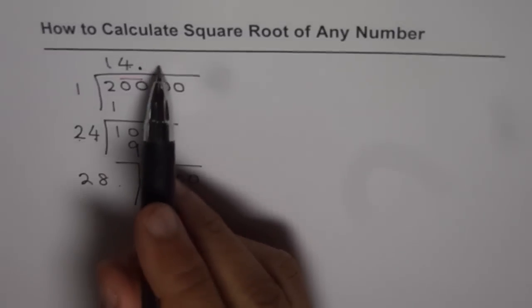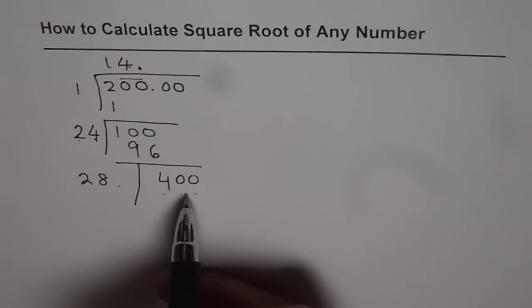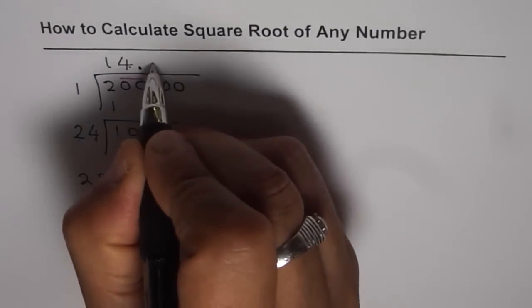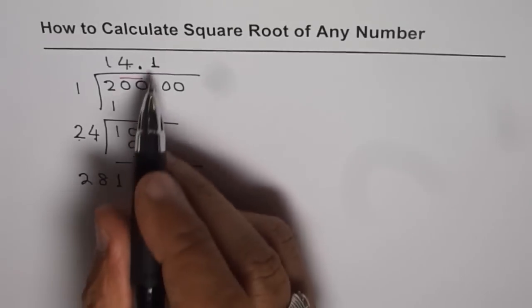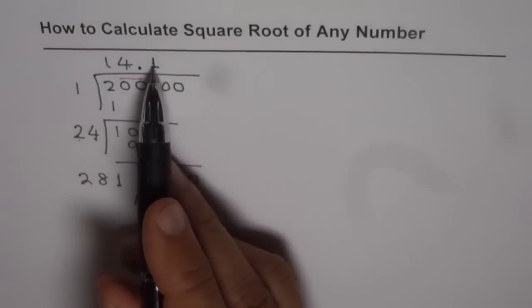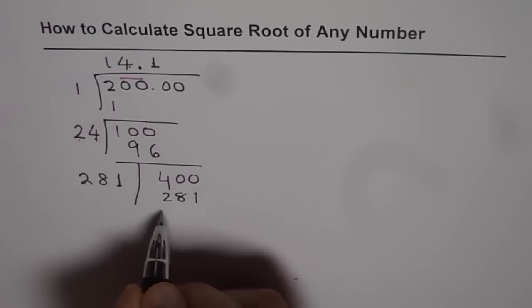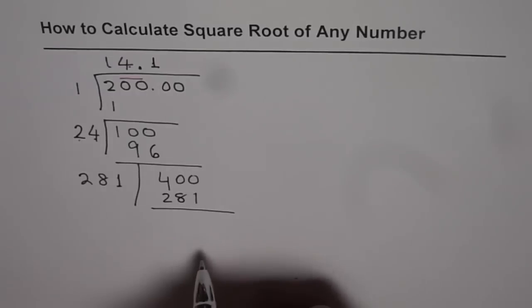If I write 2, then 2 times 2 is 4, so we get a number more than 400. So we'll go with 1. We can write 1 in the quotient and 1 in the divisor. When you multiply by 1, you get 281. Now take away 281 from 400.